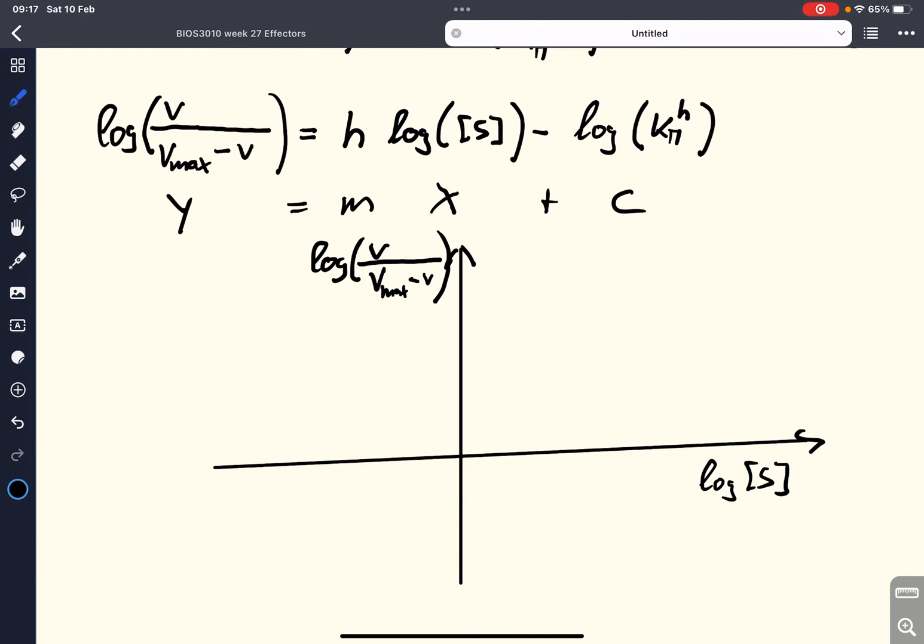So, if we plot that from our data, what we will find is a straight line, if it is a strictly linear Hill coefficient. So, this point here, that would be our negative log of Km to the power of H.